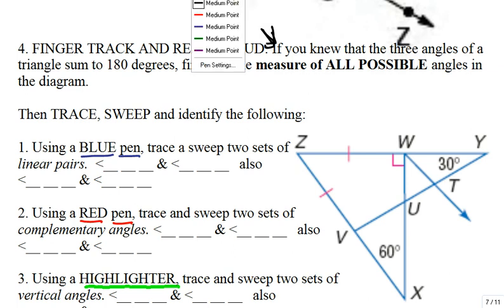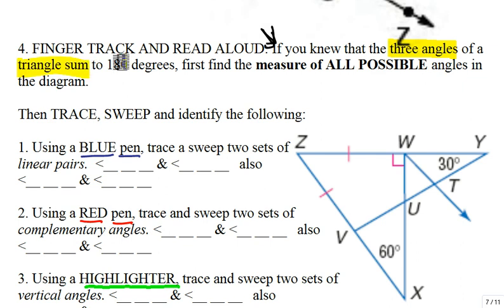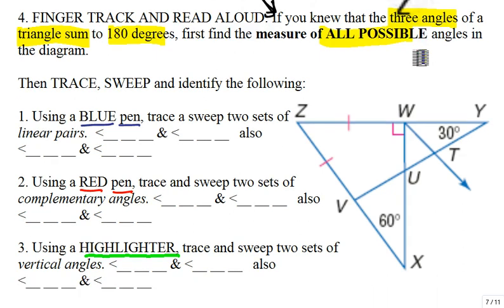Okay, so it says this: that if you knew that the three angles of a triangle sum to 180 degrees, find the measure of all possible angles in the diagram, then you go for what information you know.